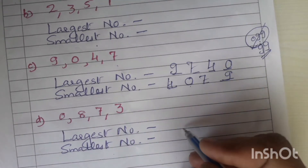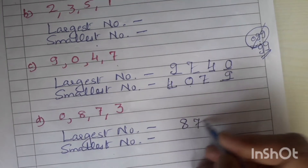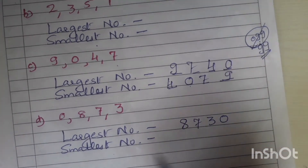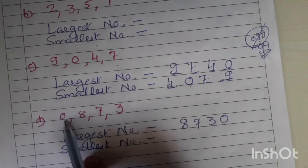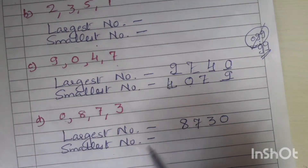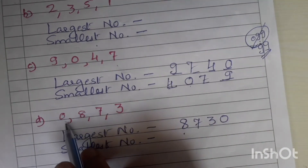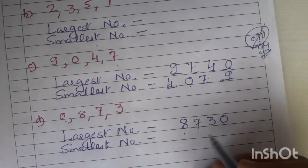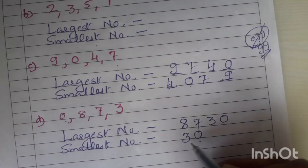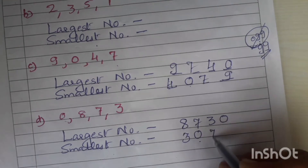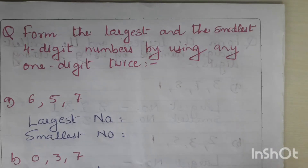Similarly, using digits 8, 7, 3, 0: the largest number is 8, 7, 3, 0. For the smallest number, 0 cannot be the leftmost digit. So write the second least number first — that is 3 — then introduce 0, followed by 7 and 8. The smallest number is 3, 0, 7, 8.